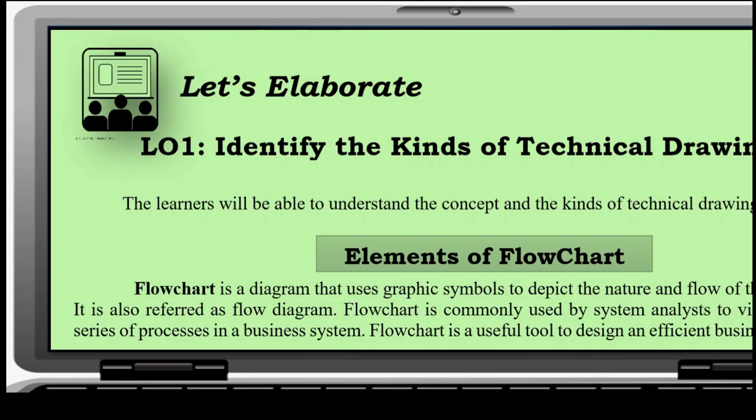Elements of flowchart. First, let's define what is flowchart. It is a diagram that uses graphic symbols to depict the nature and flow of a process. It is also referred to as the flow diagram. Flowchart is commonly used by system analysts to visualize the series of processes in a business system. Flowchart is a useful tool to design an efficient business system.